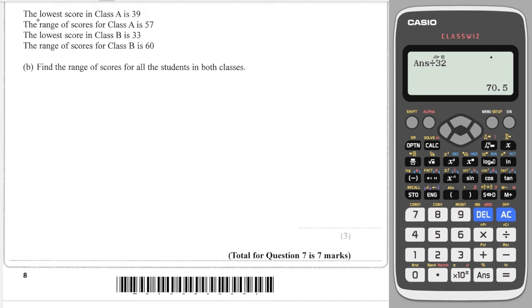Okay, the next part of the question says the lowest score in Class A is 39 and the range of scores for Class A is 57. So that means that if the lowest score is 39, there's some bigger score over here which has a gap of 57. So I can work out the upper score, or the highest score in Class A, by adding on 57, and that gives me 96.